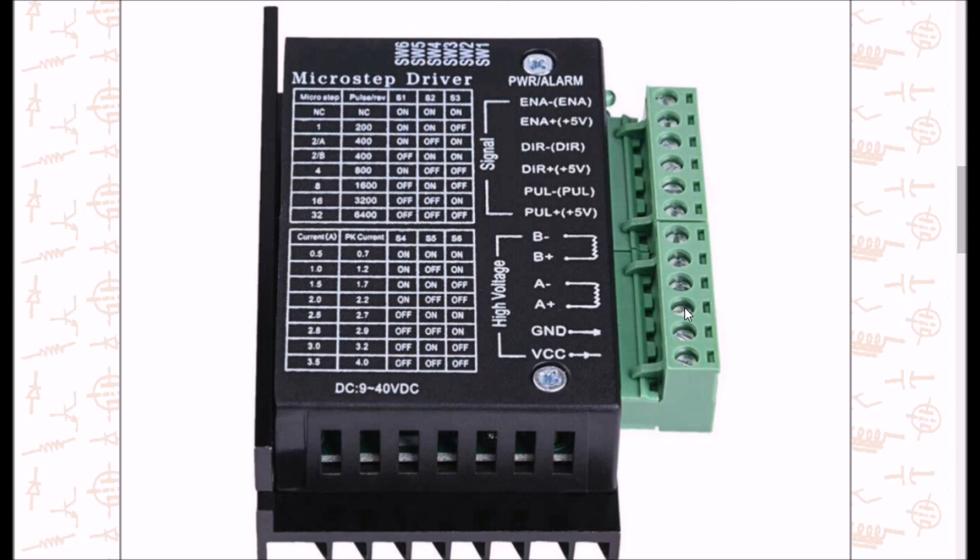We have four connections here for your stepper motor windings. This is assuming a bipolar stepper motor. Then we have two input pins for power VCC, should be plus VCC, and the voltage range is a minimum of nine up to 40 volts.